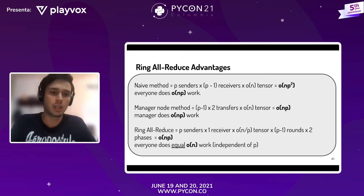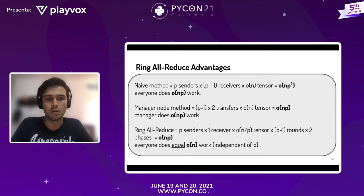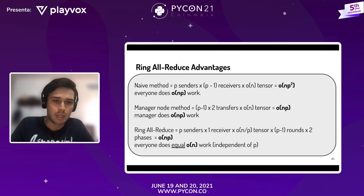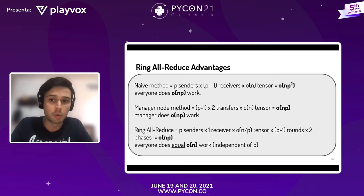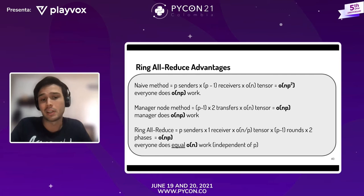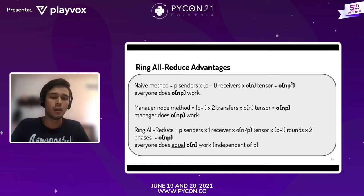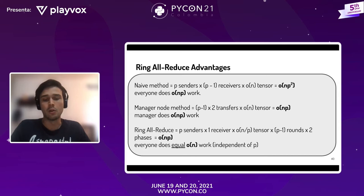En términos de complejidad computacional: en el método Baseline el trabajo total de red es O(N × P²), donde N es el tamaño del tensor y P el número de GPUs, y cada nodo hace O(N × P). En el método del nodo maestro el trabajo total se reduce a O(N × P), pero el nodo maestro hace casi todo el trabajo. En el Ring All-Reduce, implementado en librerías de NVIDIA, el trabajo total también es O(N × P), pero cada nodo solo hace O(N), lo cual es bueno porque no depende del número de GPUs.